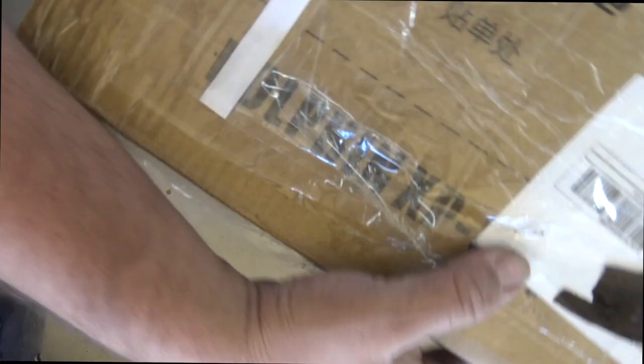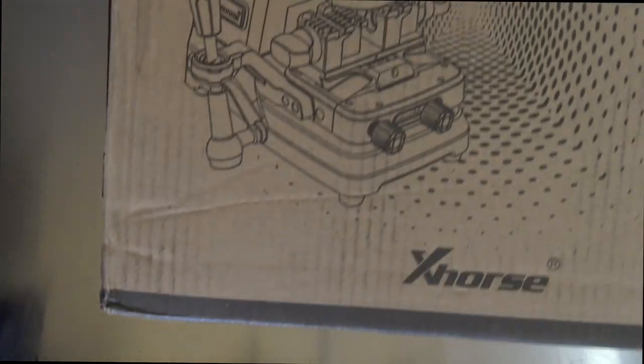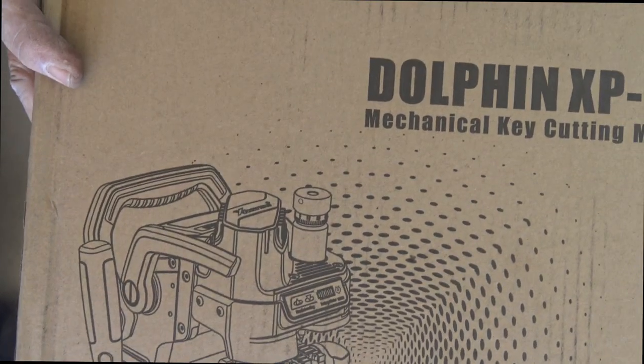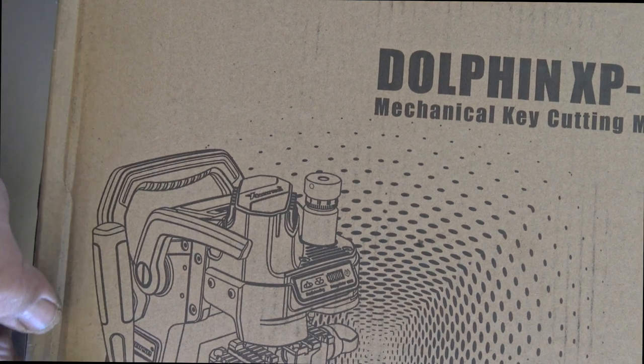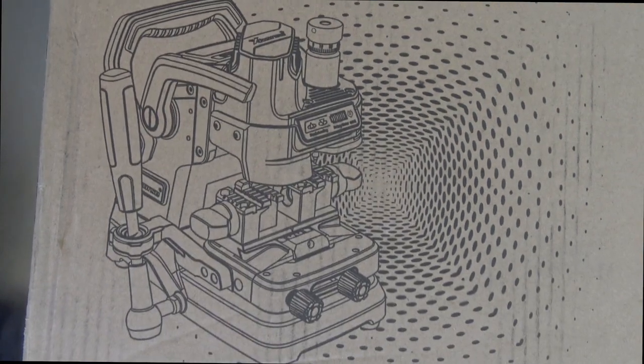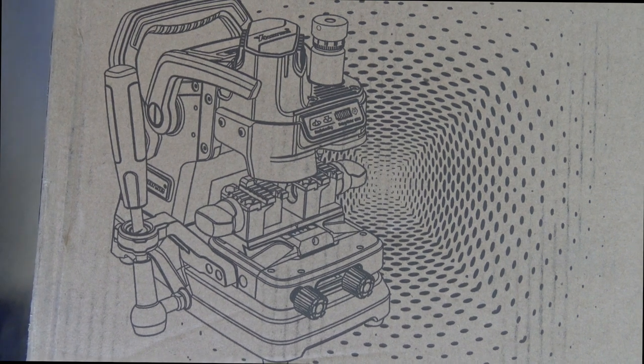Welcome to another video from Dr. Lock. What we have on the bench today is this one. Can you see it? Okay, so this is the Dolphin XP007 made by X-Horse. It is a duplicator with inbuilt battery and I'll go over a couple of the specs on it here.